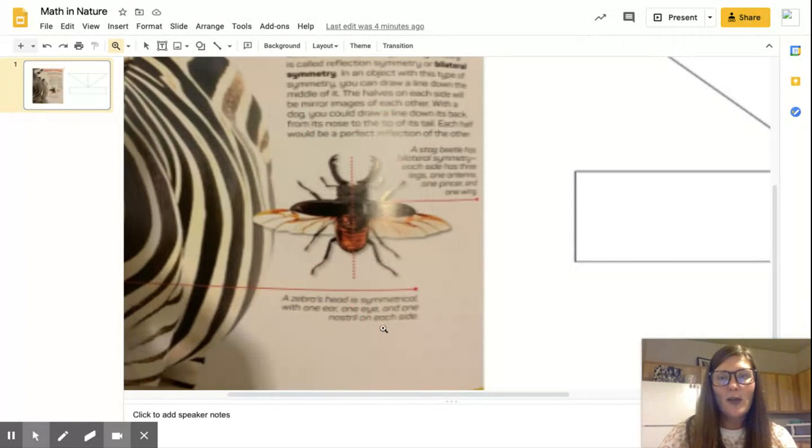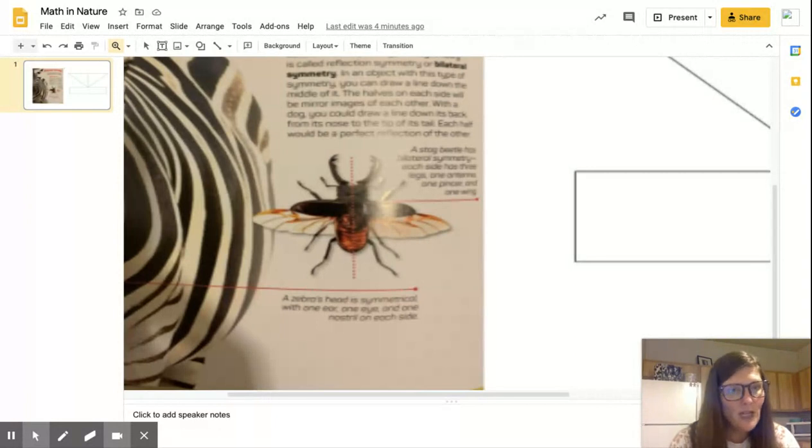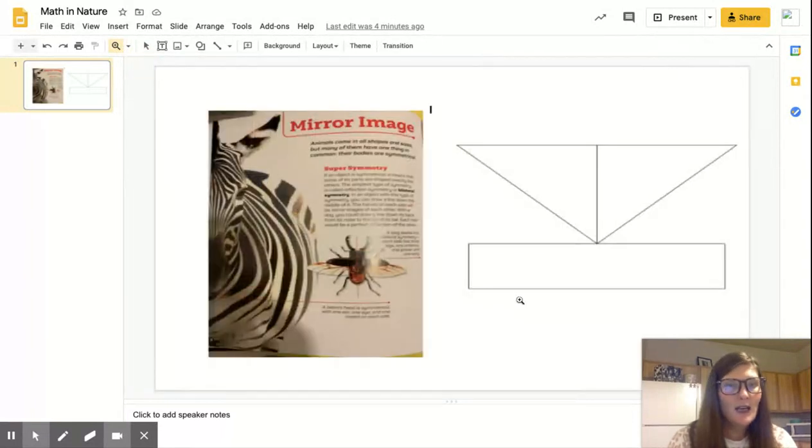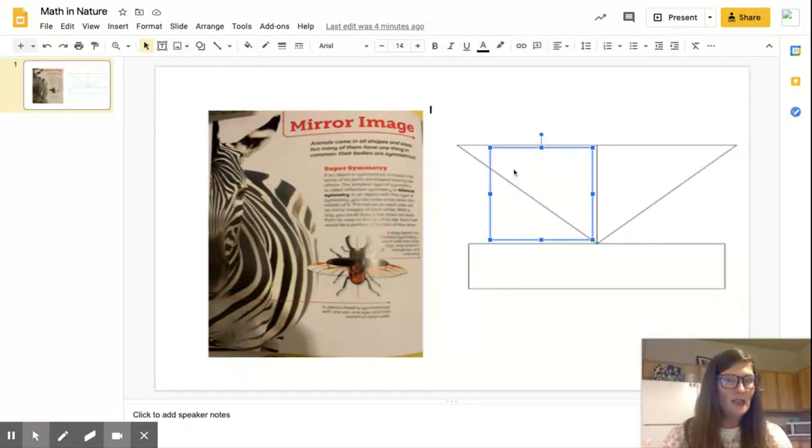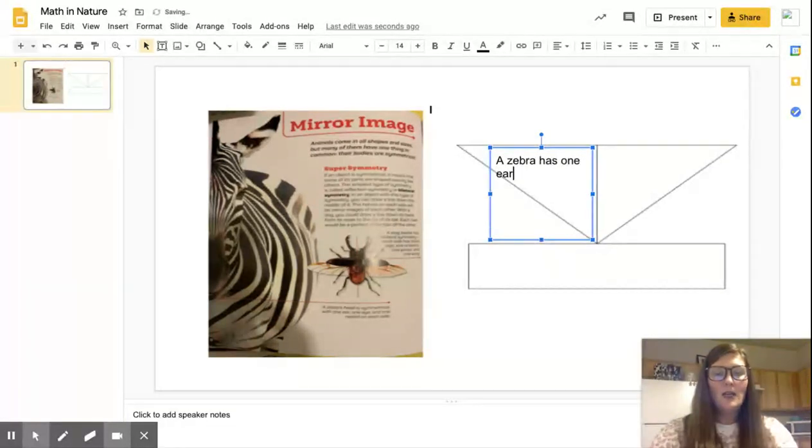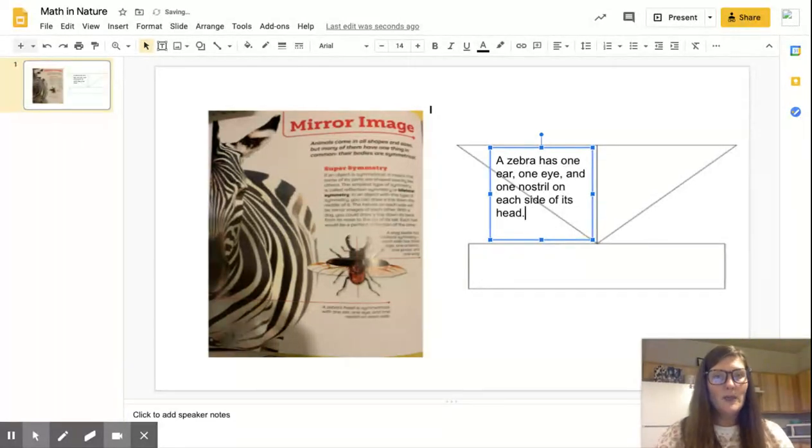I'm going to zoom in on the caption for this picture right here, because we're just going to do this visual tool for one text feature. There's two text features on this page, one here and one here with this fly. But I want to do the big zebra one. So I'm going to look at that and it says a zebra's head is symmetrical with one ear, one eye and one nostril on each side. So I've learned that from the text feature. I'm going to write that on this side.